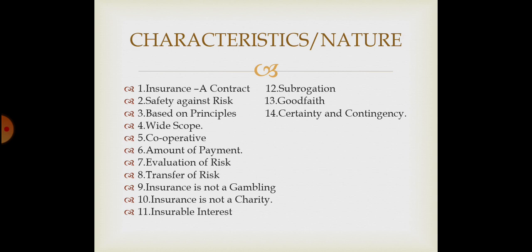Next is certainty and contingency. In life insurance, certainty principle applies — if you are a person, you know the amount will be paid after a particular period of time. But contingency applies in general insurance, where the event may or may not occur — it is an uncertain situation, so the payment is only made if the event occurs. This was the characteristics and nature of insurance, and the next topic we will discuss in the next video. Thank you.